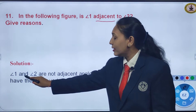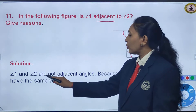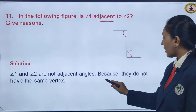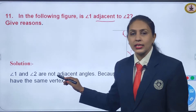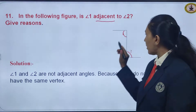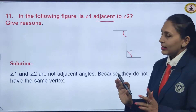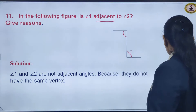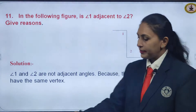So, angle 1 and angle 2 are not adjacent angles because they do not have the same vertex. Because they do not have the same vertex, they are not adjacent angles. Let us go to the next question.